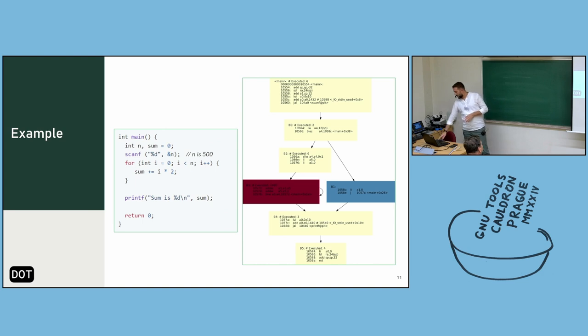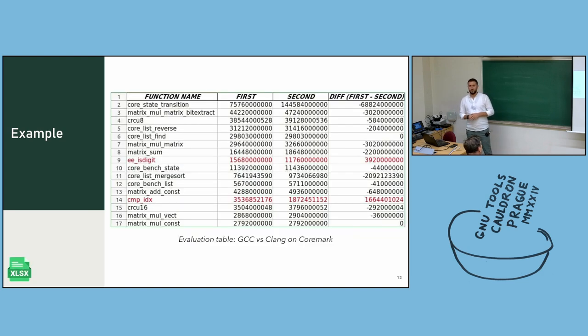If you run our instrument with the comparison mode, suppose you executed CLANG and GCC on core mark, and our instrument will provide such a table, which is a real table. And you can see that only 99 and 40 rows can generate fewer dynamic instructions. And let's remember ee is digit function. We will discover it next.